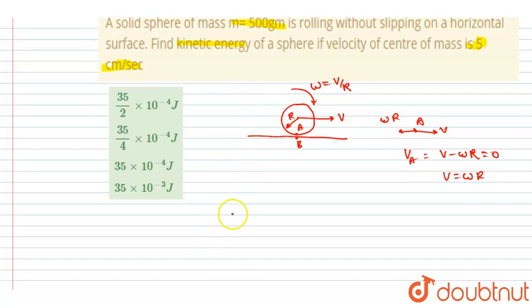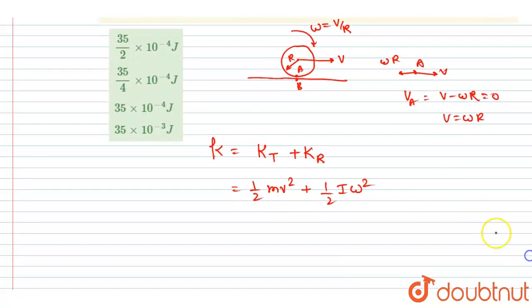Now the second thing is we want the kinetic energy of the system. So here there will be two kinetic energies: translational plus rotational. And translational we know that it is half mv squared plus rotational is half I omega squared.